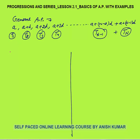In the previous lesson I discussed that the sum of first n terms of an AP is given by n by 2 times 2a plus n minus 1 into d.